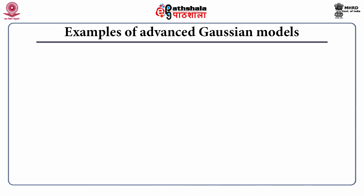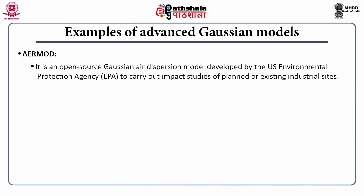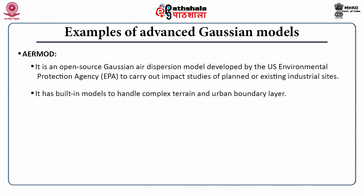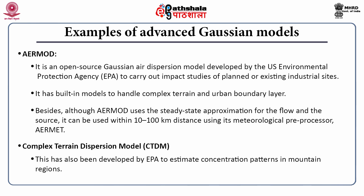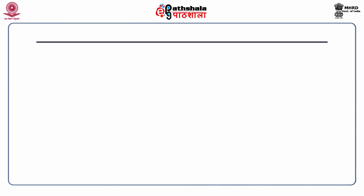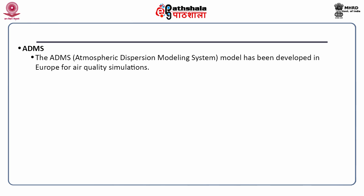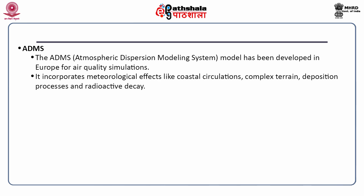An example of an advanced Gaussian model is the American Meteorological Society or Environmental Protection Agency regulatory model known as AERMOD. It is an open source Gaussian air dispersion model developed by the US EPA to carry out impact studies of planned or existing industrial sites. It has built-in models to handle complex terrain and the urban boundary layer. Although AERMOD uses the steady-state approximation for the flow and the source, it can be used within 10 to 100 kilometers distance using its meteorological pre-processor known as AERMET. Another example is the complex terrain dispersion model known as CTDM, developed by EPA to estimate concentration patterns in mountain regions. The atmospheric dispersion modeling system known as ADMS has been developed in Europe for air quality simulations and incorporates meteorological effects like coastal circulations, complex terrain, deposition processes, and radioactive decay.